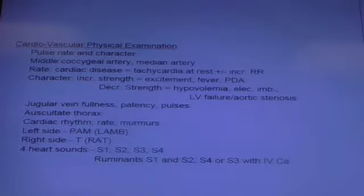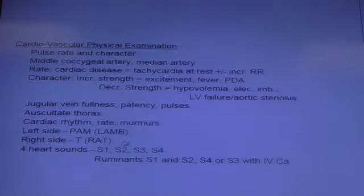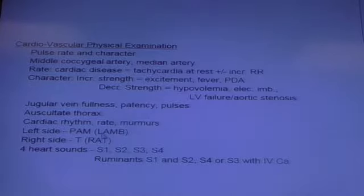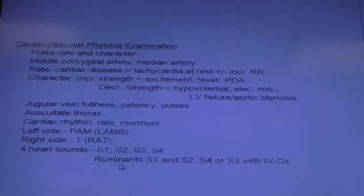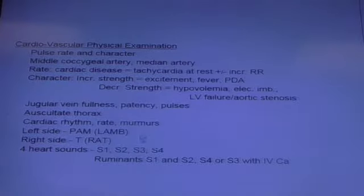Regarding valve terminology: left AV valve, mitral, or bicuspid — these are all synonyms. Left AV valve stands for left atrioventricular valve, otherwise known as the mitral valve, otherwise known as the bicuspid valve. These are human terminologies — when you look at animals, they don't really have a true bicuspid as in two cusps; we adapt the terminology from human medicine. And right AV or tricuspid applies similarly in lamb and rat.